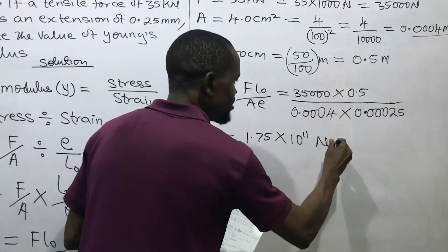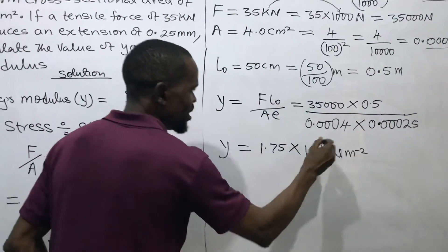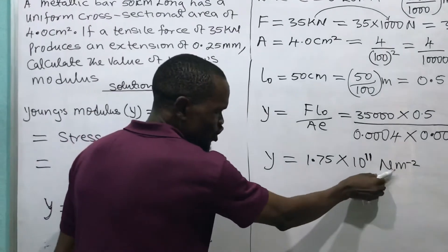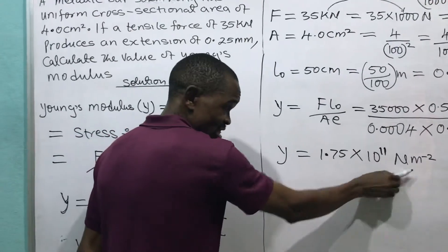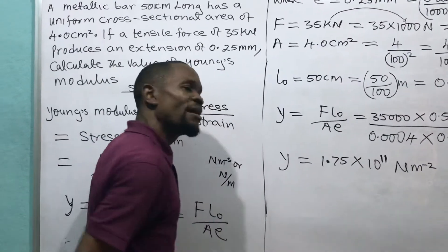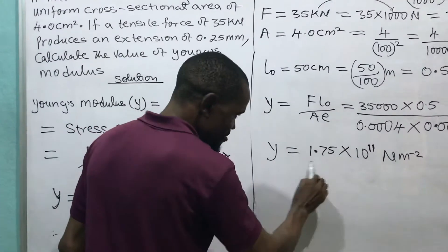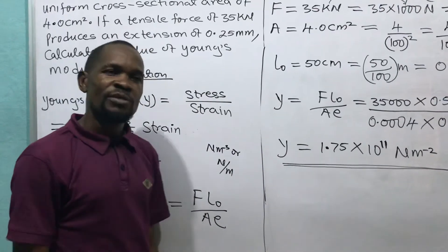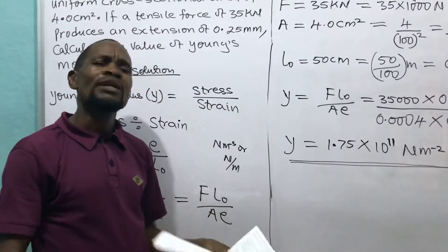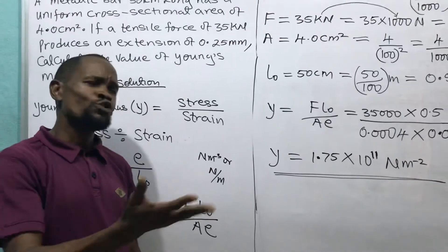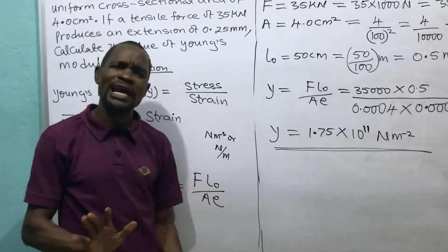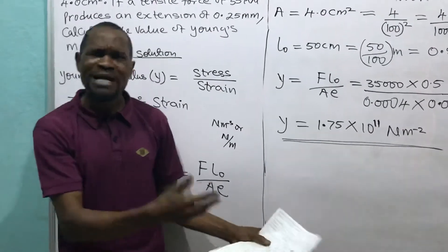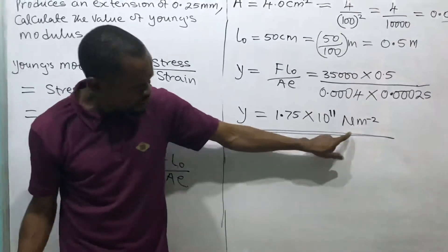If I didn't include the unit, even though I got the correct numerical answer, this answer becomes zero in the marking scheme. I will show you the marking scheme when we start the practical — we will read it together on the board. You will see how both practical and theory are marked.